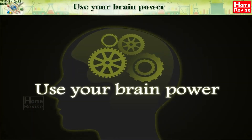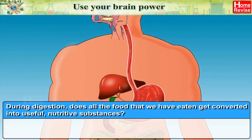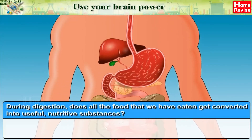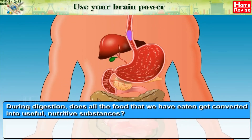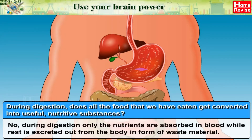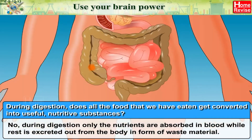Brain power: During digestion, does all the food we have eaten get converted into useful nutritive substances? No — during digestion, only the nutrients are absorbed into the blood, while the rest is excreted from the body in the form of waste material.